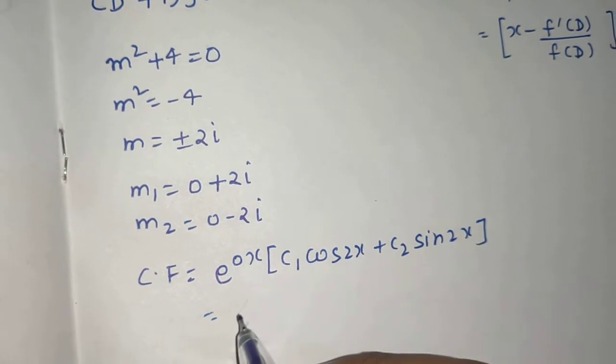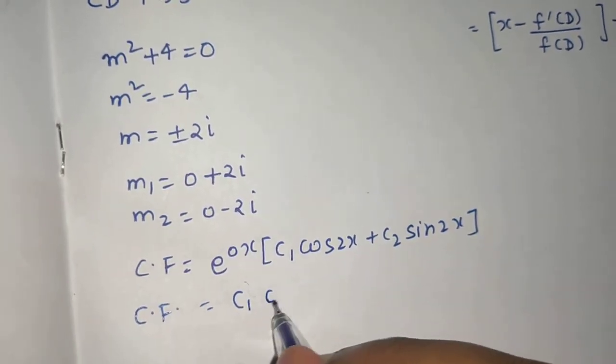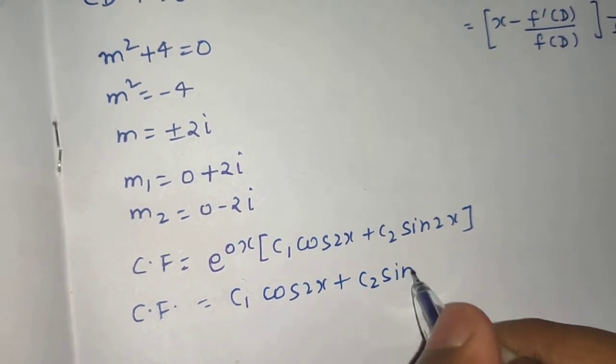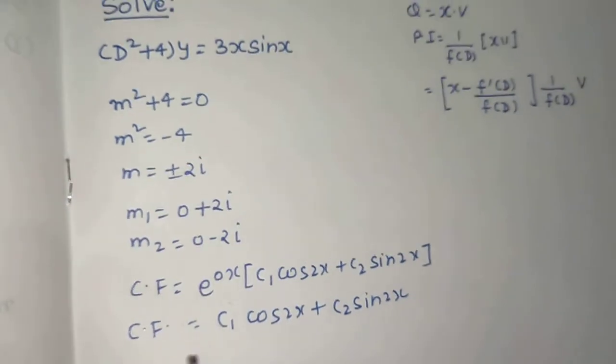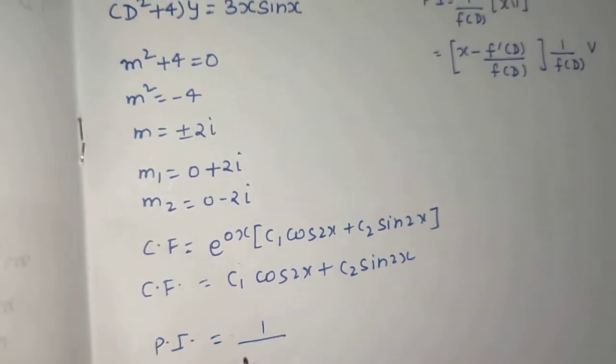Because e^(0x) is 1, I can finally write my complementary function as C₁cos(2x) + C₂sin(2x). Okay, fine. Complementary function. Coming to the particular integral, which will be 1 upon f of D, which is D² + 4, operating on the RHS.